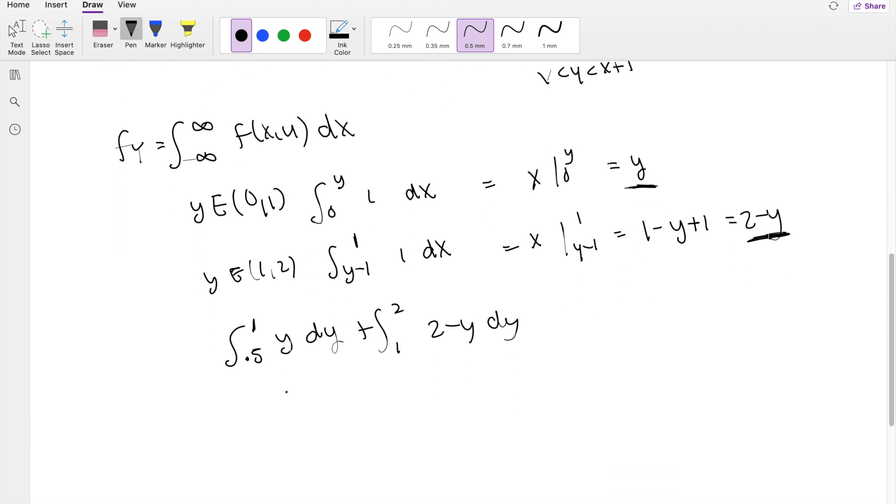So then integrating this out, you get y squared over 2, plus 2y minus y squared over 2. Integrating this from 1 to 2, integrating this from 1/2 to 1.